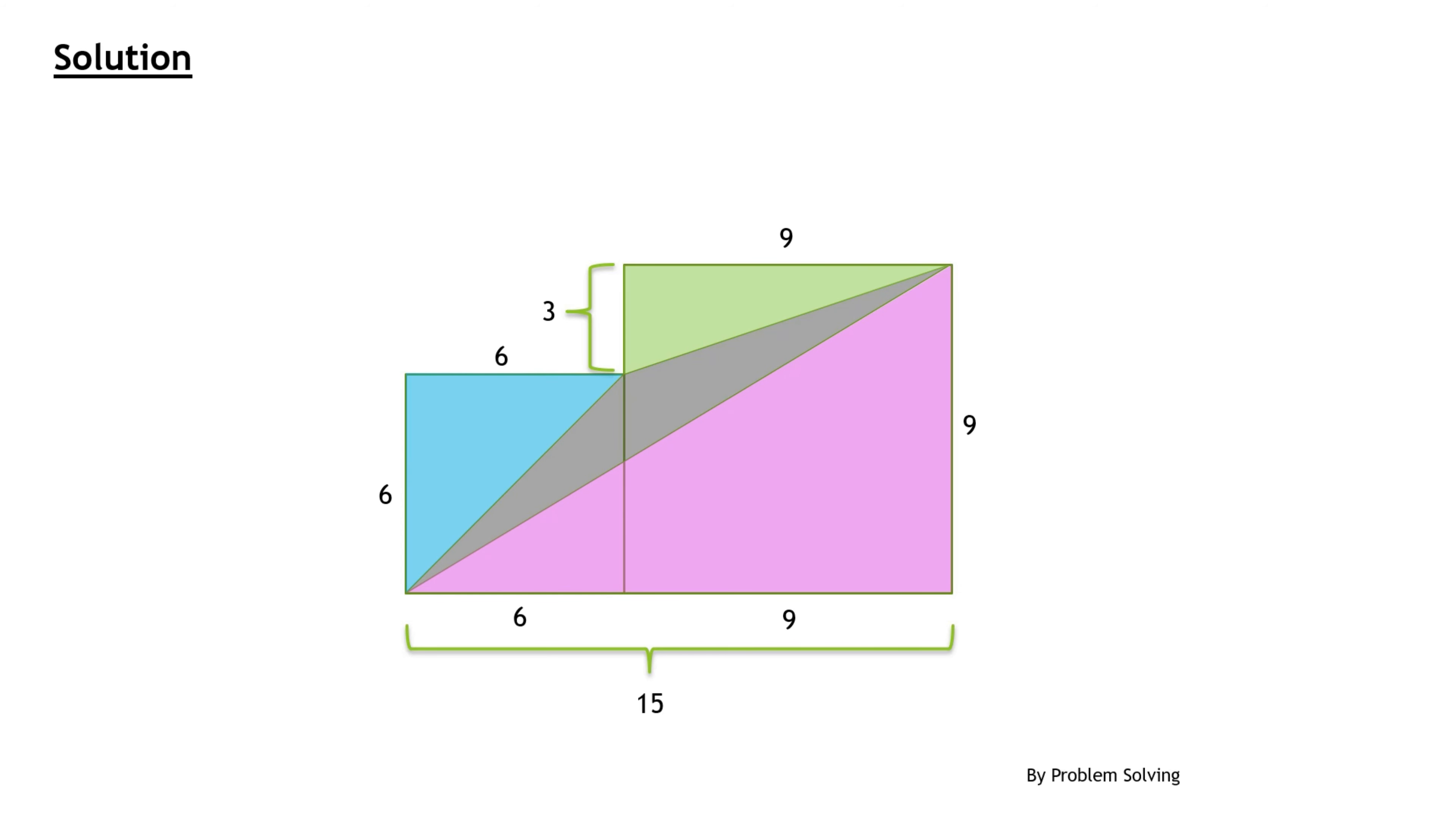So the area of both squares is 6 times 6 plus 9 times 9 which is 117. So that's the area of the total figure.